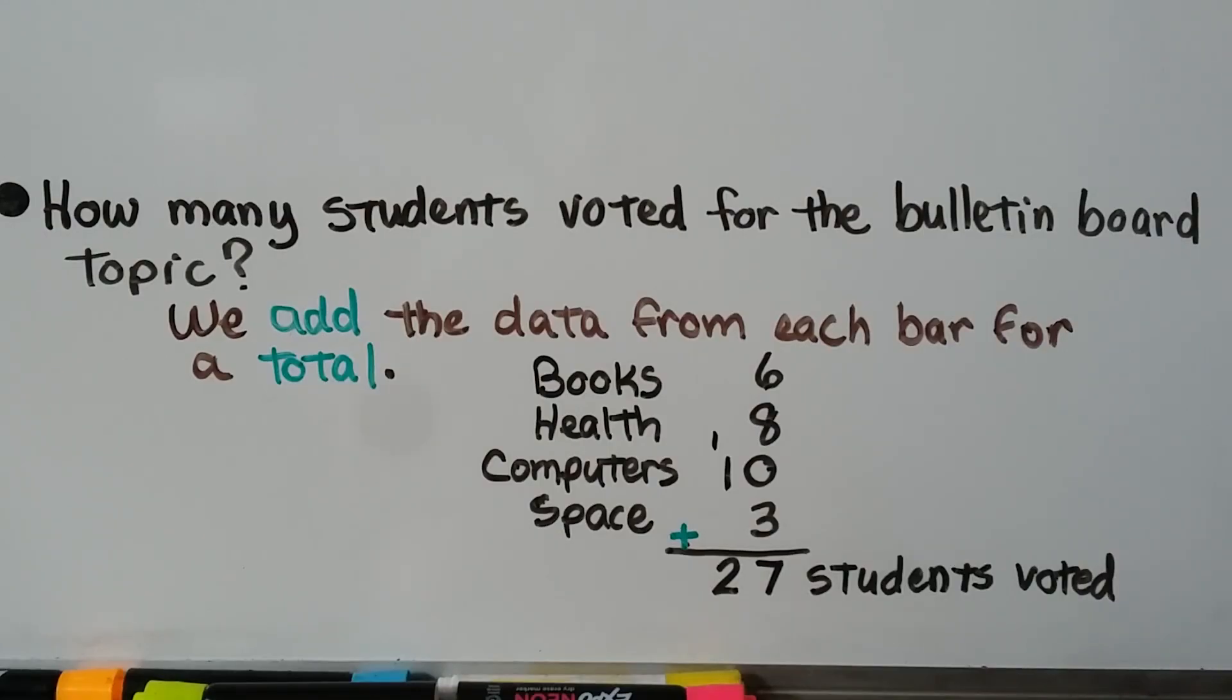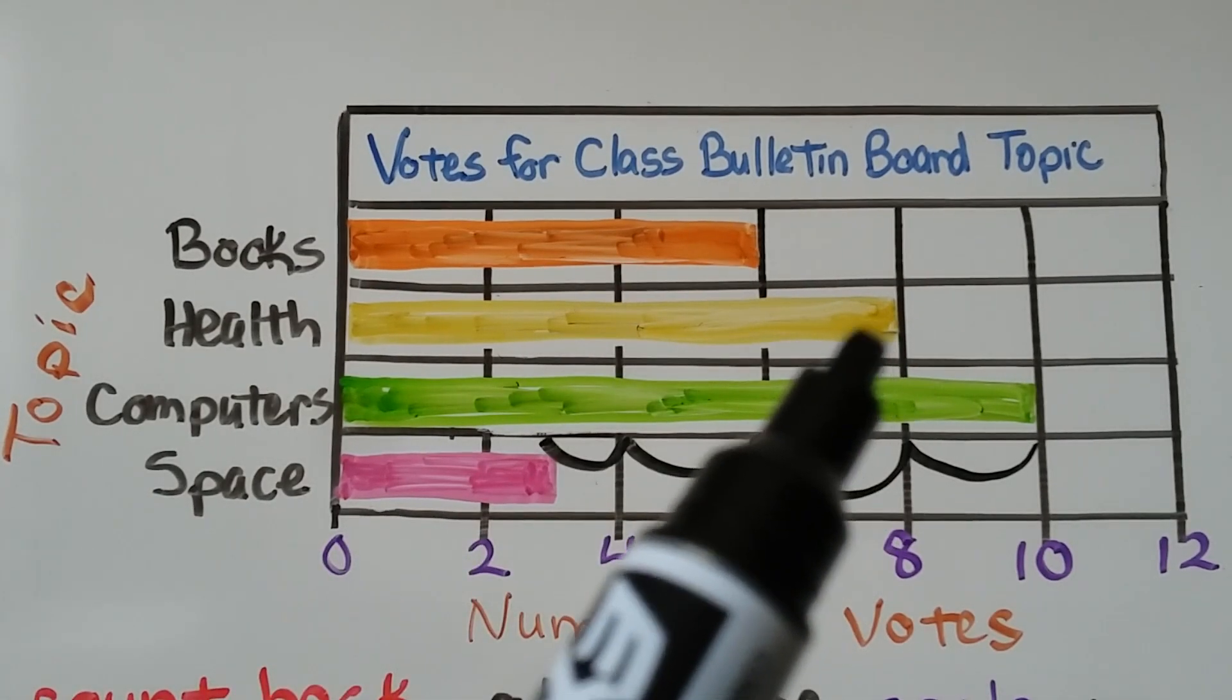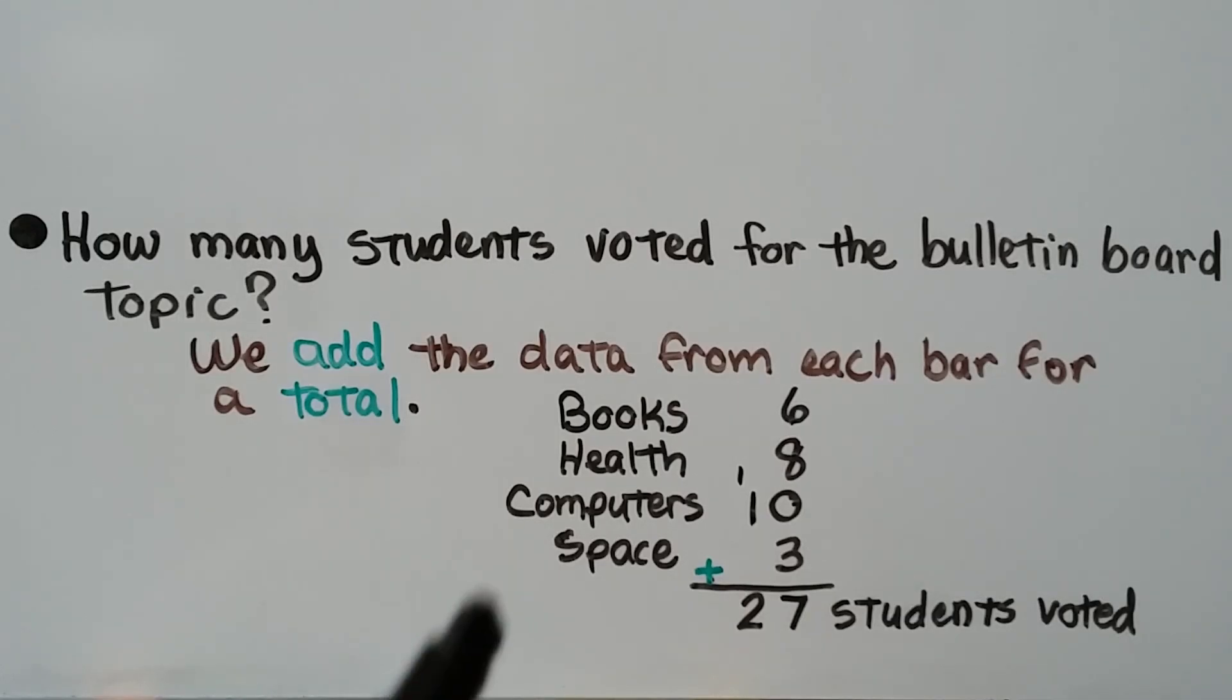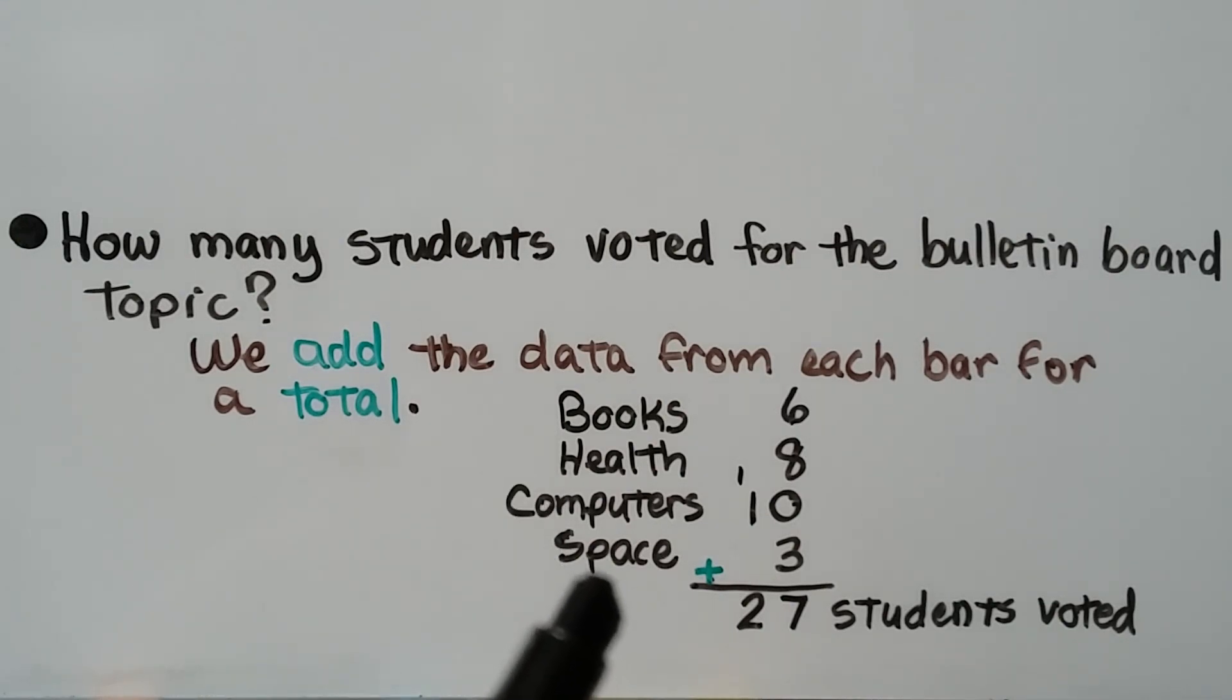How many students voted for the bulletin board topic? We add the data from each bar for a total. We need to add 6 + 8 + 10 + 3. Six books, eight health, ten computers, three space. We start in the ones column.